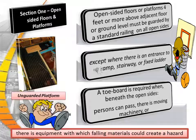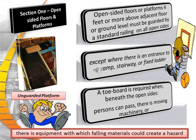Open-sided floors or platforms 4 feet or more above adjacent floor or ground level must be guarded by a standard railing on all open sides, except where there is an entrance to a ramp, stairway, or fixed ladder. A toe board is required when beneath the open sides a person can pass or there is moving machinery. Open-sided floors, walkways, platforms, and runways are covered under .23c3, which states: regardless of height, a standard railing and toe board must be used to guard open-sided floors, walkways, platforms, and runways above or adjacent to dangerous equipment, pickling or galvanizing tanks, degreasing units, and similar hazards.